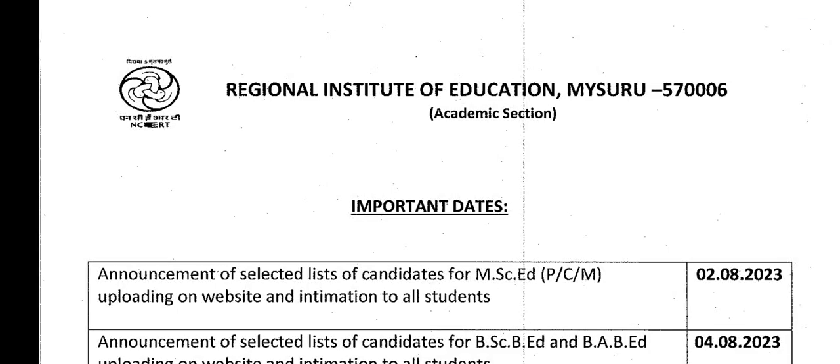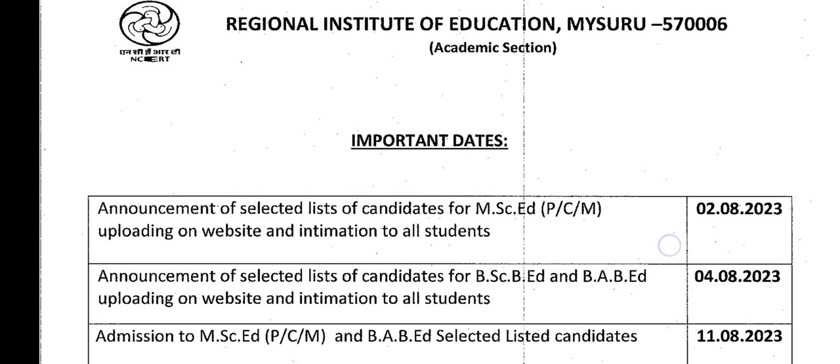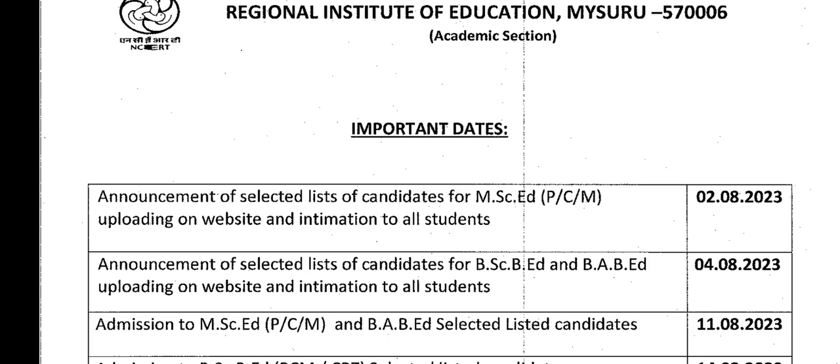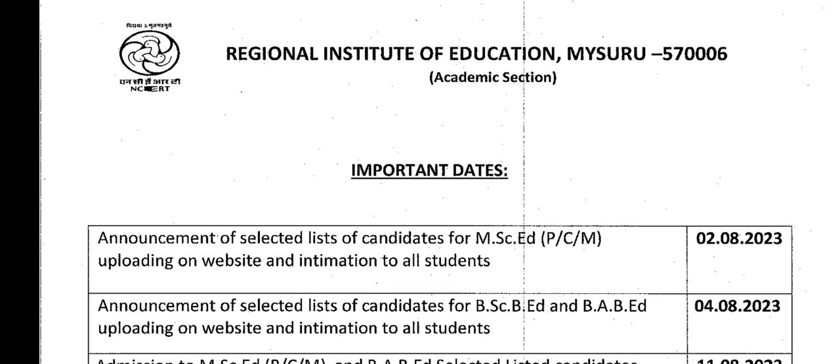Hello friends, welcome to Disease Learning. This is the date sheet of RI Mysore admission. On 2nd August, the MSc AT selected list will come out — the official website will publish the MSc AT merit list. The first merit list of MSc AT Physics, MSc AT Chemistry, and MSc AT Maths will be available.